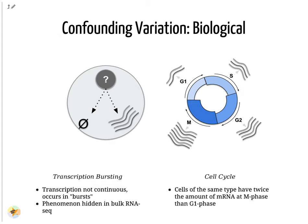Confounding biological variants appear in two forms: transcriptional bursting and cell cycle variation. Transcriptional bursting is a phenomenon that occurs in cells in which transcription occurs in discrete states of active and inactive, where the interval between these states is hard to model. In bulk RNA-seq, this phenomenon is unnoticeable as the effects are averaged out over many cells. But in single-cell, two cells of the same type may exhibit different gene profiles simply because one cell was actively transcribing and the other was not.